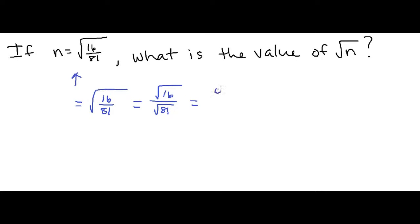And the square root of 16 is 4, and the square root of 81 is 9. So now essentially we just have n equals 4 over 9.